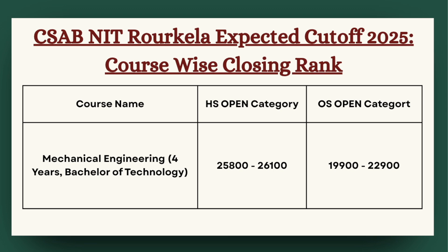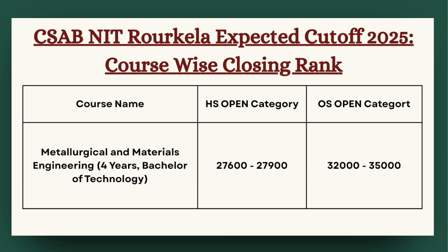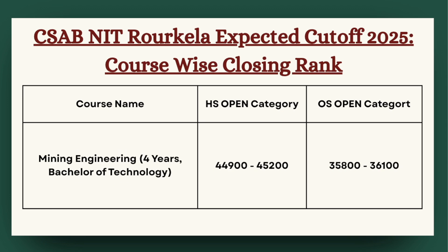Next in the list we have M&M Engineering. For HS category, the cutoff can be expected below 27,900, and for OS category less than 35,000. For Mining Engineering, the cutoff can be expected less than 45,200 for HS category and 36,100 for OS category.